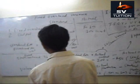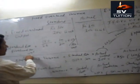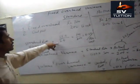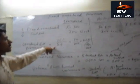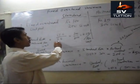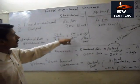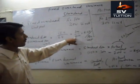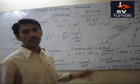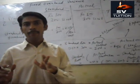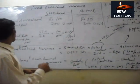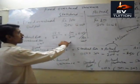The standard rate of overhead is calculated as standard fixed overhead divided by standard output: 100 divided by 200, which equals 50 paisa per unit. This is the rate we have paid to our salesman.